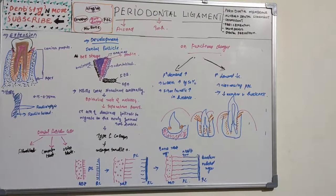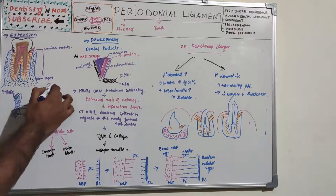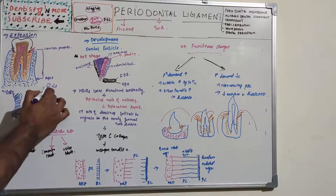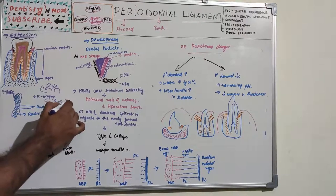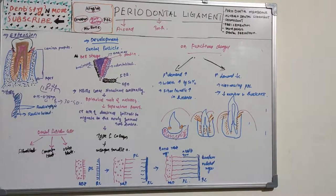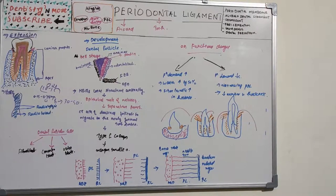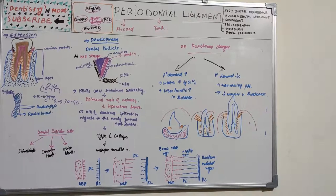The average width changes with age: around ages 10–15 it is approximately 0.21 mm, and at ages 30–50 it reduces to around 0.15 mm — so as age increases, width decreases. Width also changes with function: at time of eruption it is approximately 0.1–0.5 mm; at normal function it is 0.15–0.3 mm; and at hypofunction it reduces further.